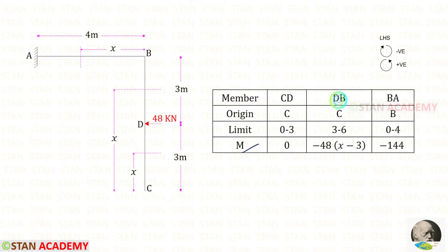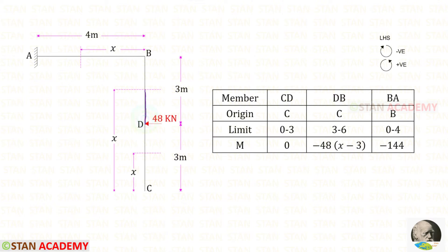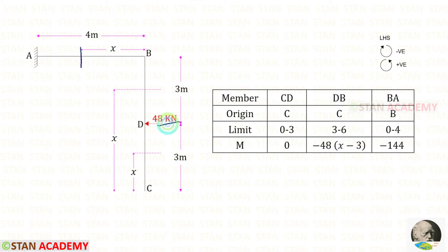Let us find M in DB. Up to the section we have a horizontal load of 48 kN acting in the clockwise direction, so it will be negative. The distance is x minus 3, giving M = -48(x - 3). For BA, up to the section we have only the horizontal load of 48 kN acting in the clockwise direction, so it is negative. The distance is 3, so 48 × 3 = 144, giving M = -144.